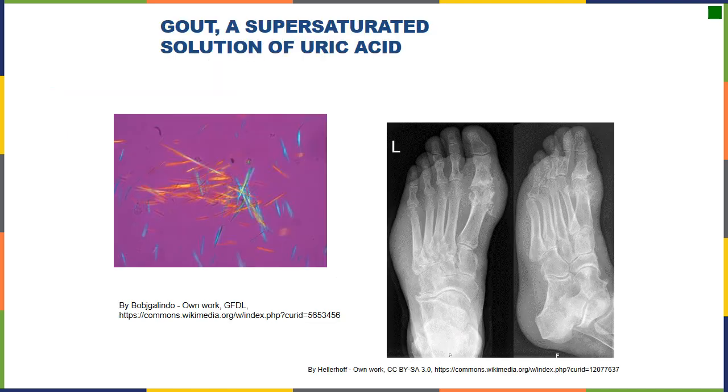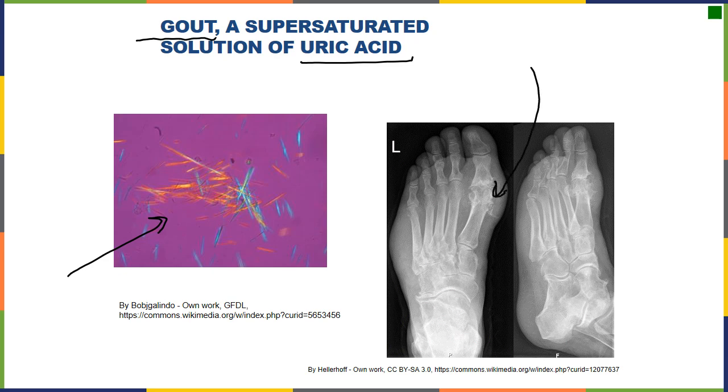What can a supersaturated solution look like? Well, one of the more interesting ones is gout. Gout is a supersaturated solution of uric acid. Uric acid is a natural byproduct of our metabolism, and mostly we just excrete it out. But sometimes it can become supersaturated. It makes these little, tiny, sharp crystals, and they crystallize and precipitate out frequently in the joints.